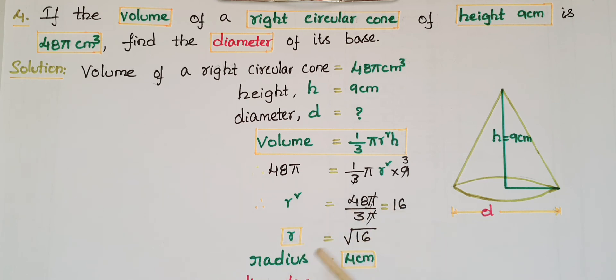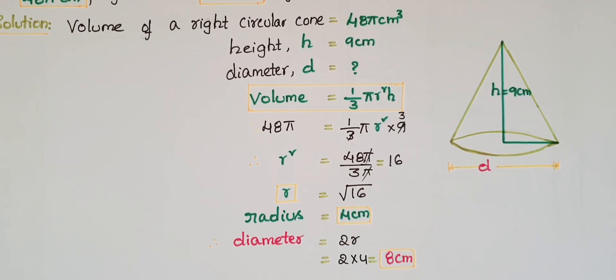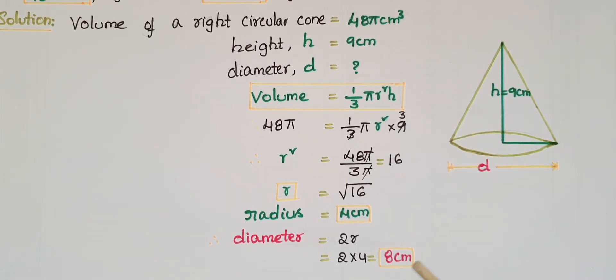The radius is 4 centimeters, so the diameter equals twice the radius, which is 2 times 4, that is 8 centimeters.